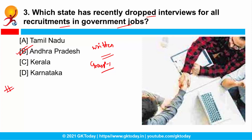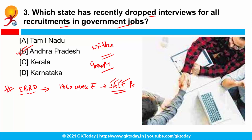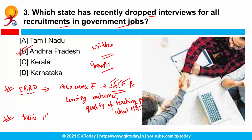Andhra Pradesh was also in the news because IBRD — the International Bank for Reconstruction and Development — has sanctioned funds of ₹1,860 crore to implement the SALT program: Supporting Andhra's Learning Transformation. This program aims to improve learning outcomes, quality of teaching practices, and school management in basic education. Additionally, Andhra Pradesh has decided to set up India's first government-run ambulance network for animals.